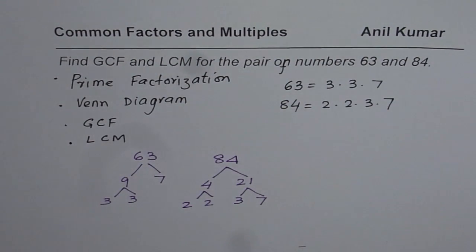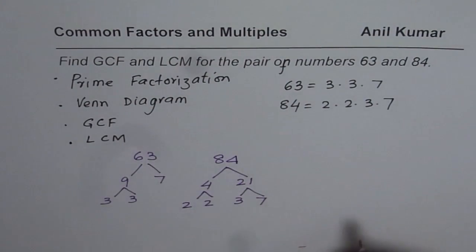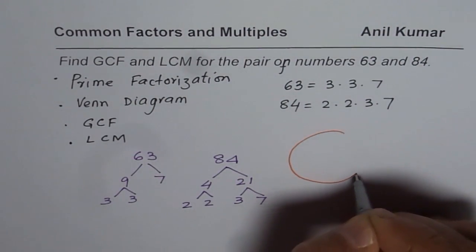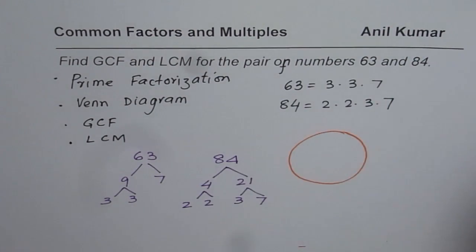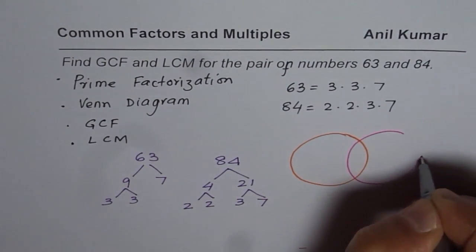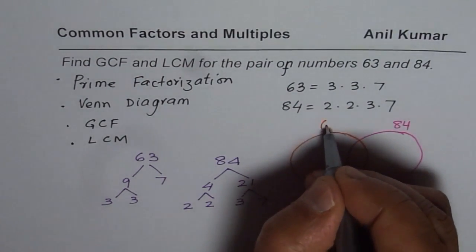Now I will show you how with the help of Venn diagrams we can actually find both greatest common factor and least common multiple. So let me write down the factors of 63 in this circle and the factors for 84 in the other circle. This is for 84 and this circle is for 63.